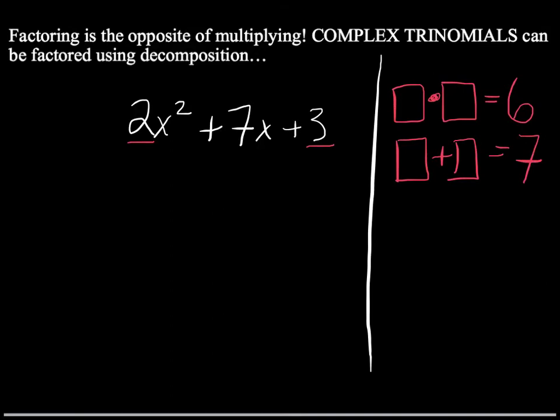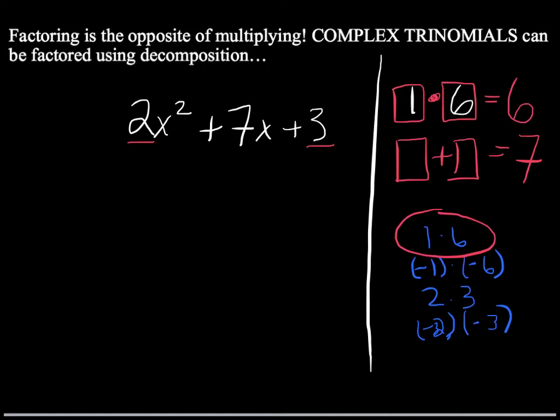Okay, so we can think about numbers that multiply to 6, like 1 times 6, -1 times -6, 2 times 3, -2 times -3, and so on. In fact, that's the complete list. And as it turns out, 1 times 6 is the pair of numbers we need, because although 1 times 6 equals 6, 1 plus 6 is 7.